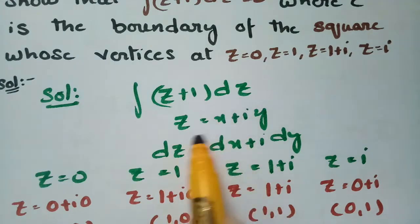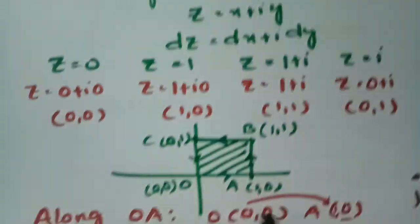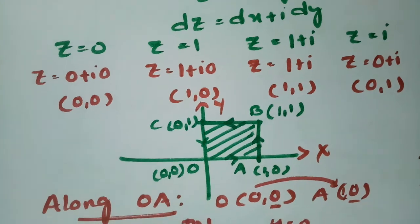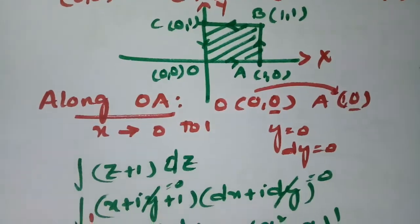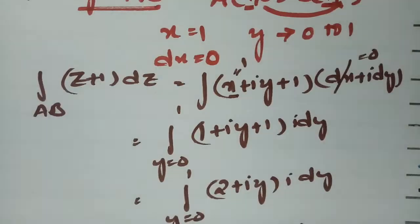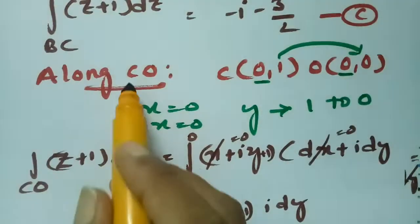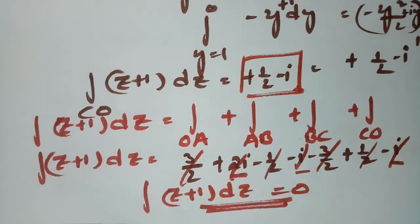To summarize: with z = x+iy and dz = dx+i·dy, we shifted to the xy-plane, plotted the square, and evaluated the integral along each of the four sides OA, AB, BC, and CO. Adding all values gives zero. Thank you for watching — I'll be uploading more problems related to Cauchy's integral theorem, which are also very important.